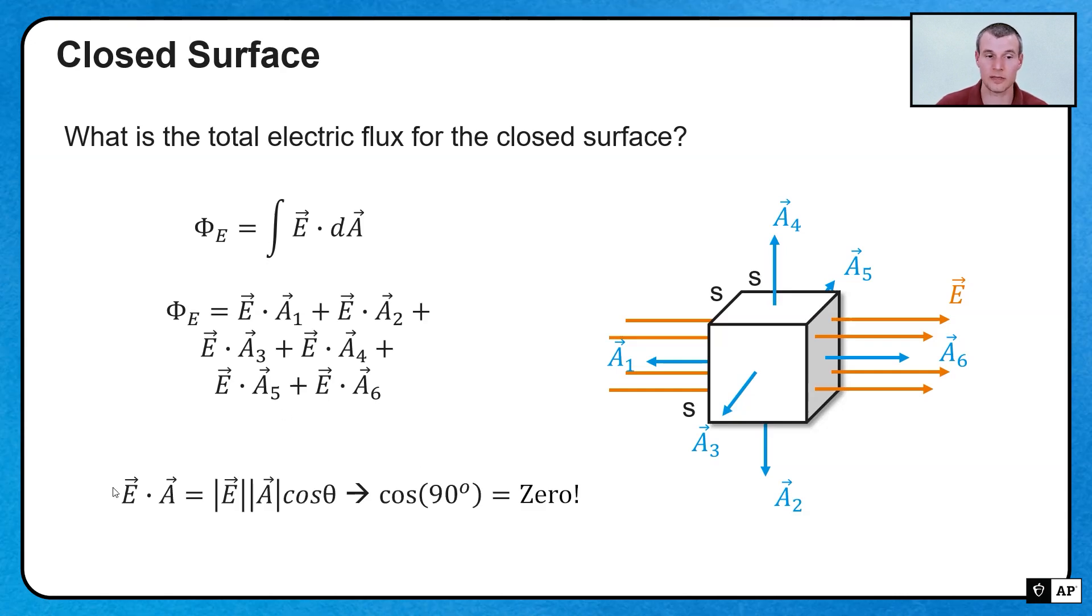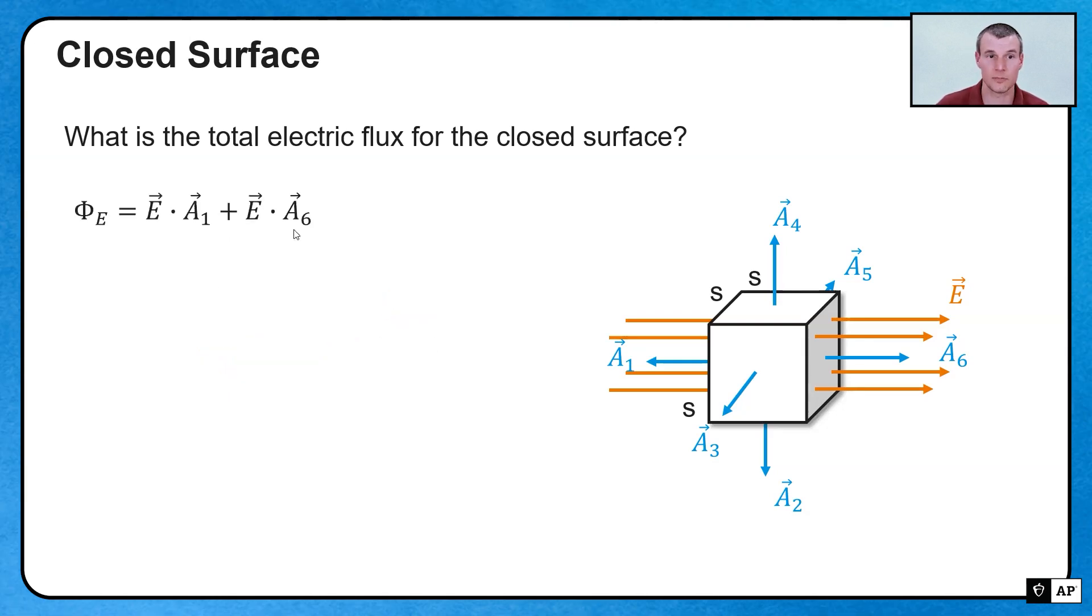When I do this, I have to remember that E dot A is E A cosine theta, and remembering that cosine of 90 degrees is zero. Wait, so that's going to be for A2, A3, A4, and A5. All of those are just going to cancel out, because the electric field isn't going through one of those surfaces. Think about the example of somebody walking by in the hallway, like we talked about in the previous video. If they're just walking by, they're not going into the room. This electric field is walking by this surface, not going in, not going out, just kind of passing by. So that's where all those terms cancel out.